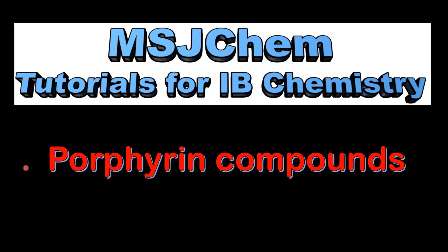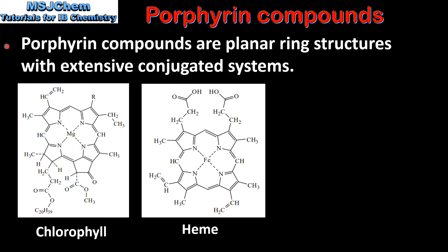This is MSJChem. In this video I'll be looking at porphyrin compounds. Porphyrin compounds are planar ring structures with extensive conjugated systems. Here we have two examples of porphyrin compounds — on the left we have chlorophyll and on the right we have heme.